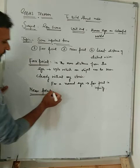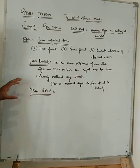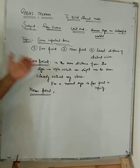It is the maximum distance from the eye up to which an object can be seen clearly without any strain.